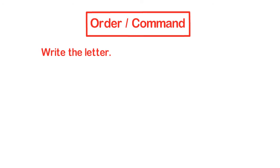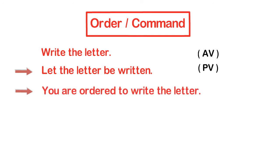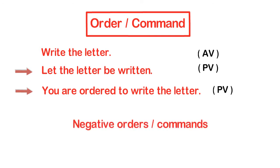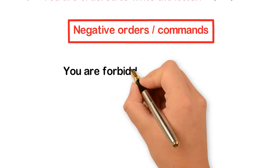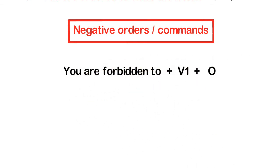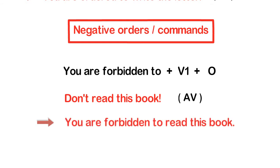'Write the letter' becomes 'Let the letter be written,' or 'You are ordered to write the letter.' For negative orders or commands, follow this structure: 'You are forbidden to' + first form of the verb + object. For instance, 'Don't read this book' in passive becomes: 'You are forbidden to read this book.'